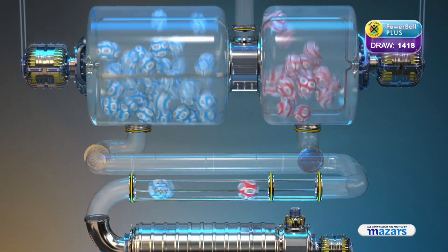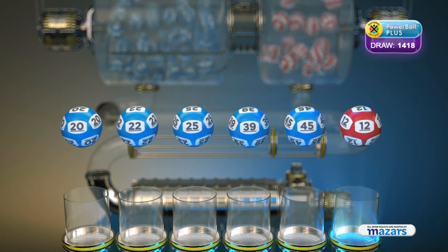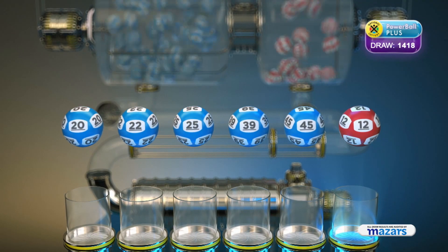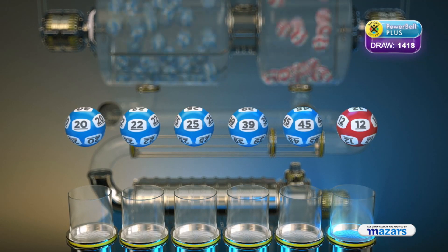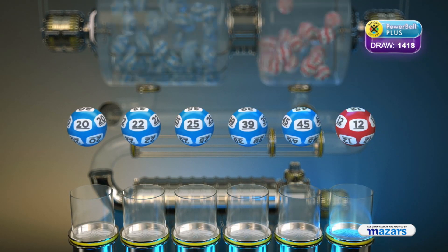Let's recap these numbers in numerical order: 20, 22, 25, 39, 45 and the Powerball is 12.